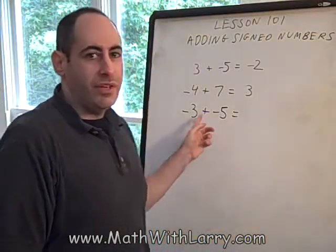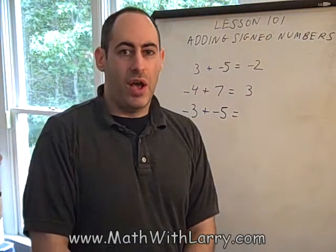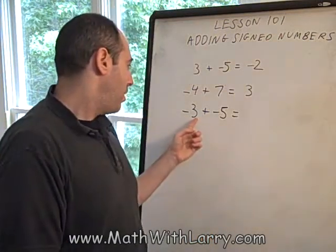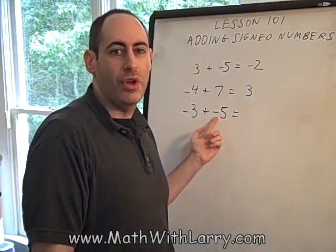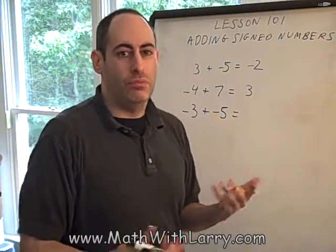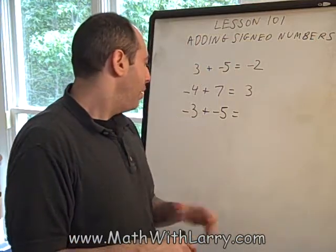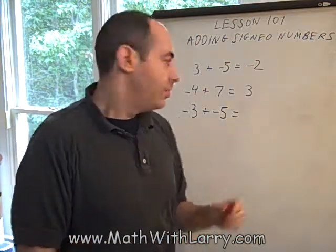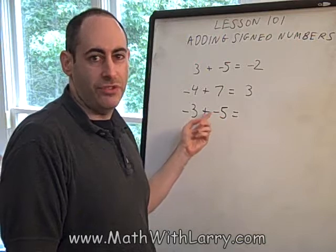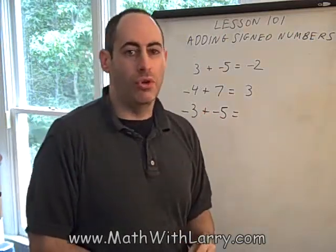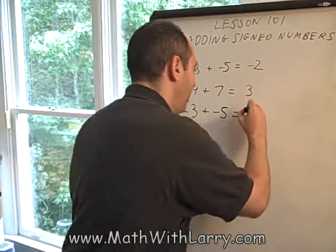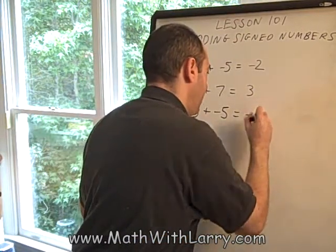We said that a negative number we're going to think of as a debt, or how much you owe. So I can think of this problem as I owe three dollars to one friend, and I owe five dollars to another friend. So what's my situation there? Well, I'm getting more and more into debt. What I'm going to do is just add up my debts. I owe three, and I owe five, so I owe a total of eight. And since I owe, I'll write that as negative. Negative eight.